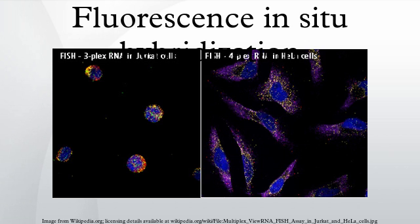At the end of the assay, the tissue samples are visualized under a fluorescence microscope. First, a probe is constructed. The probe must be large enough to hybridize specifically with its target but not so large as to impede the hybridization process. The probe is tagged directly with fluorophores, with targets for antibodies or with biotin. Tagging can be done in various ways, such as nick translation or PCR using tagged nucleotides.